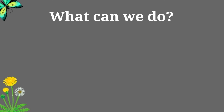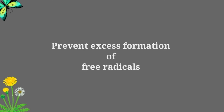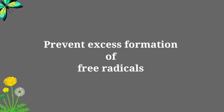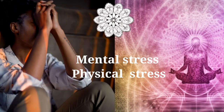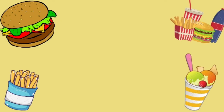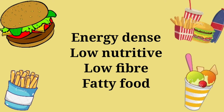So how do we prevent oxidative stress in our body? Preventing excess formation of free radicals would be the first step. This is done by avoiding obvious stressors of our body like junk food, alcohol, smoking, and mental and physical stress.